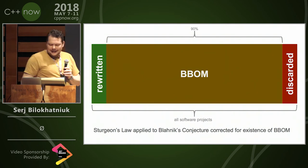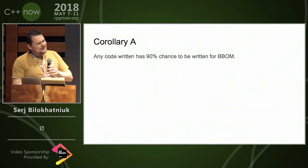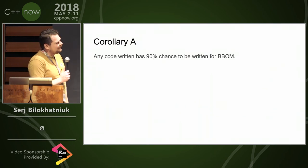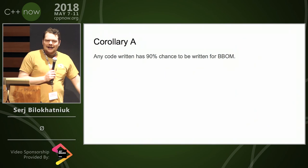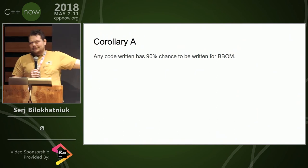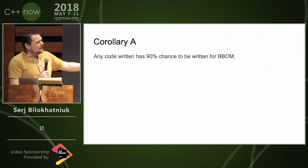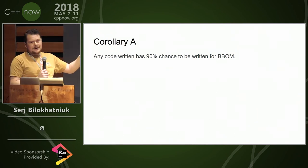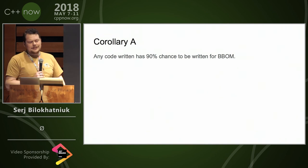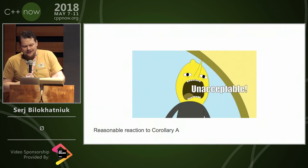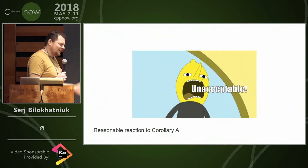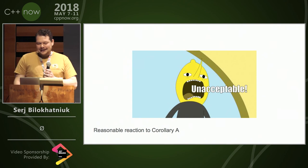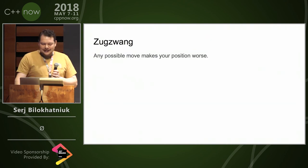And here's the corollary — I call it Corollary A. Think about it: a random sample of engineers, anyone arbitrarily taken, has a 90% chance of writing their code for the big ball of mud. What do you think about that?